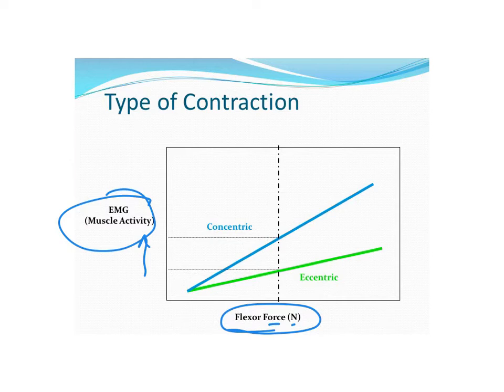This graph tells us a few things. If we want to compare the EMG activation of these two types of contractions at the same force, that would be this dotted line. So this dotted line is basically saying at this force, let's say 10 newtons, we have this level of EMG activation for eccentric contraction, we'll call this E, and we have this level of EMG activation for C, for the concentric. So you can say at the same force, you need less EMG activation for an eccentric contraction compared to a concentric contraction.